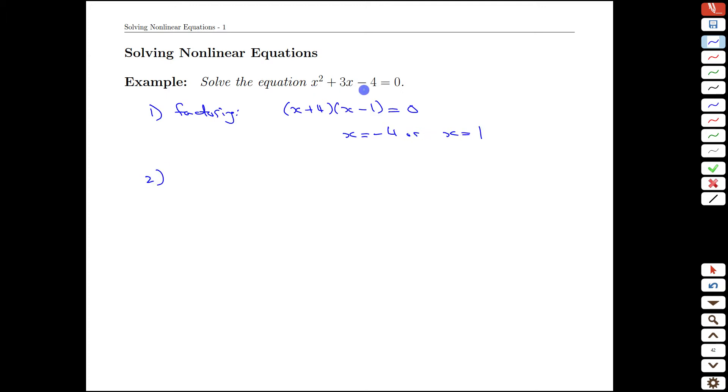Another possibility, because it's a quadratic, is to use a quadratic formula. And if we do that, we would get our x is equal to minus b, so minus the 3, plus or minus the square root of that squared, minus 4 times the a and the c. Careful with the negative signs, all over 2.